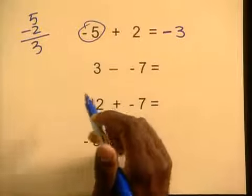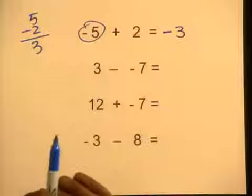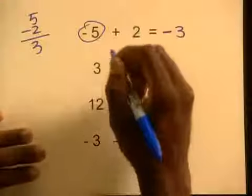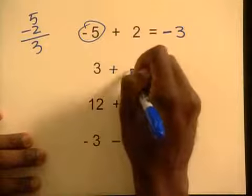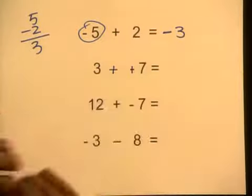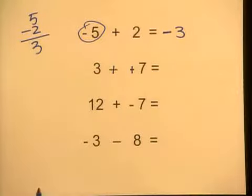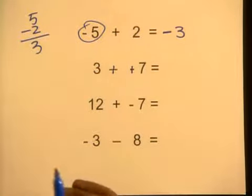Let's look at the next example. We have subtraction, so we have to do the big switch. We change subtraction to addition and change the sign of the next number. Now we have three plus seven, which gives us ten. You got it — all day, every day.